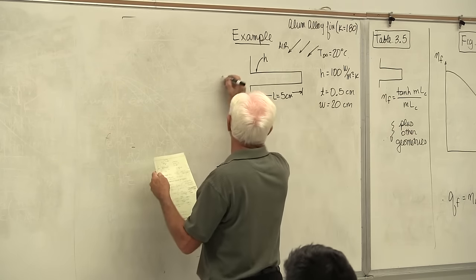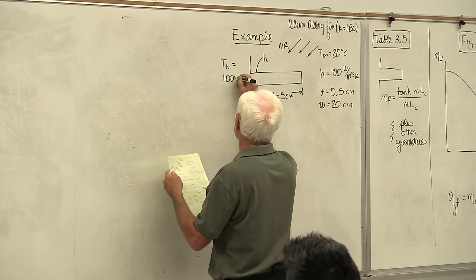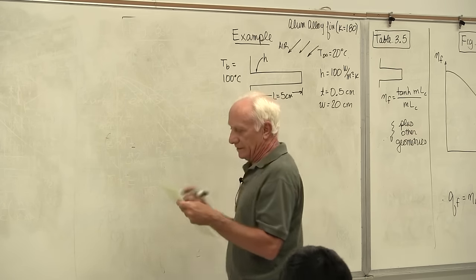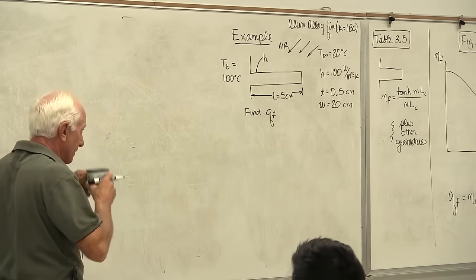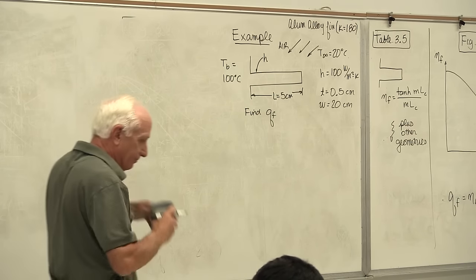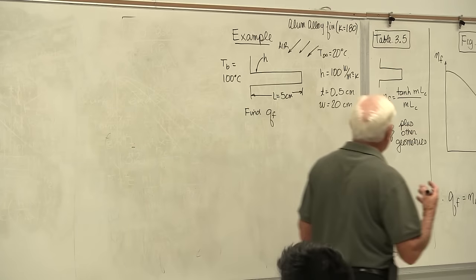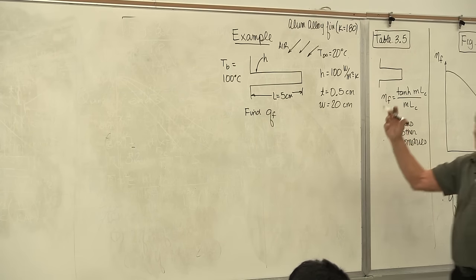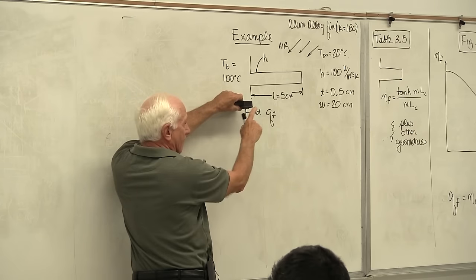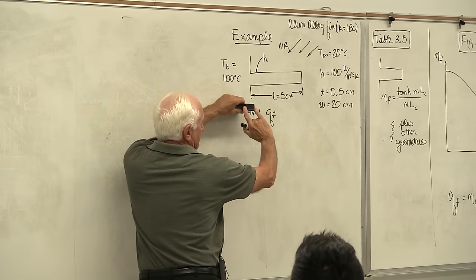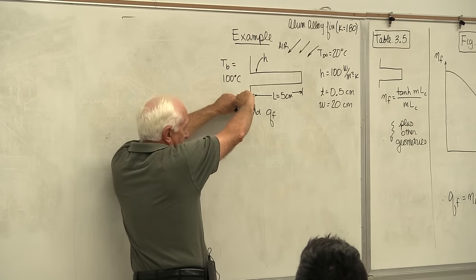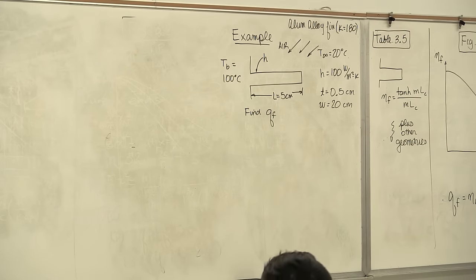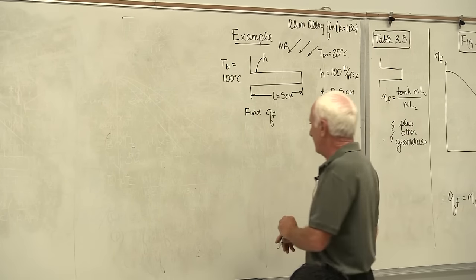The base temperature is 100 degrees C and we need to find the fin heat rate QF. First, is this a uniform cross-section fin? Yes — it's just like an eraser, 5 cm out from the board, 20 cm wide, half a centimeter thick. That classifies as a Table 3-4 application with convection from the tip.